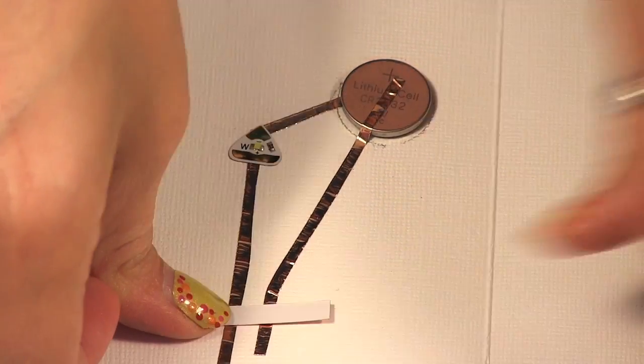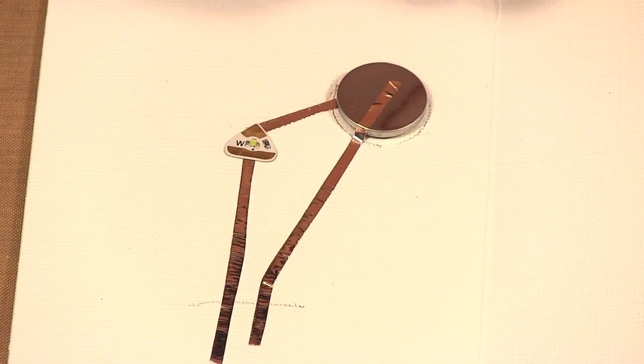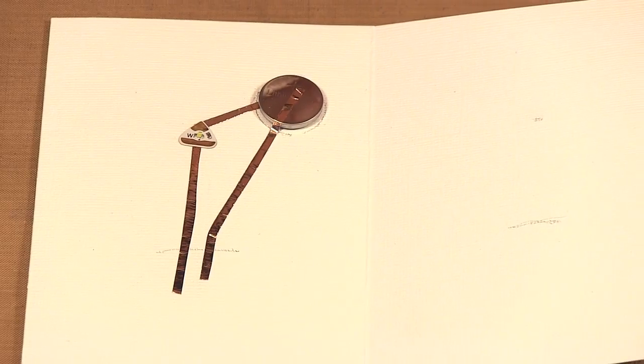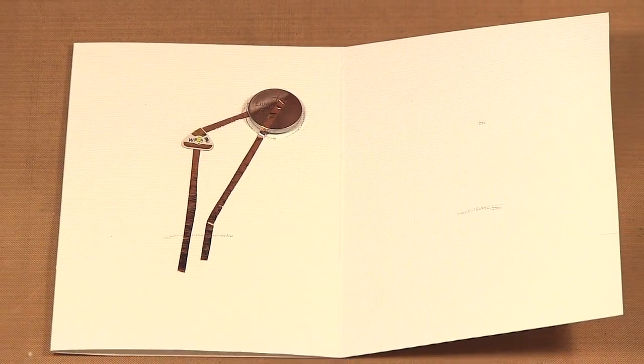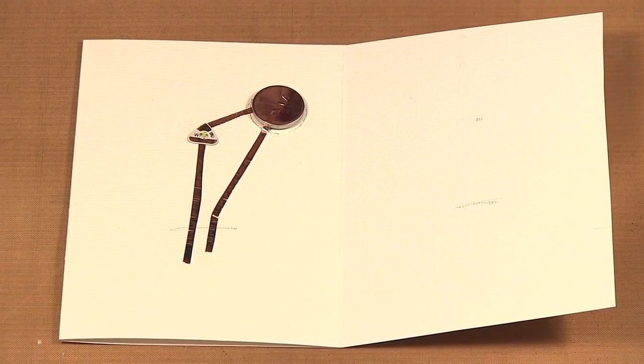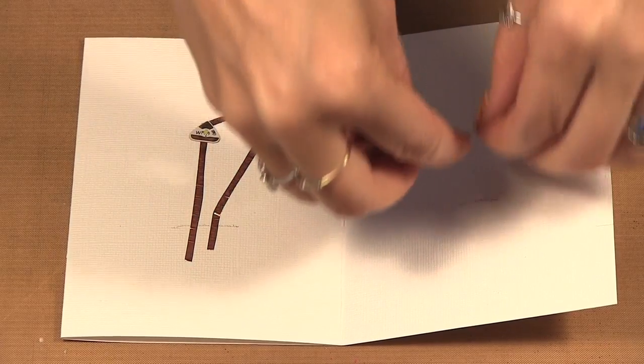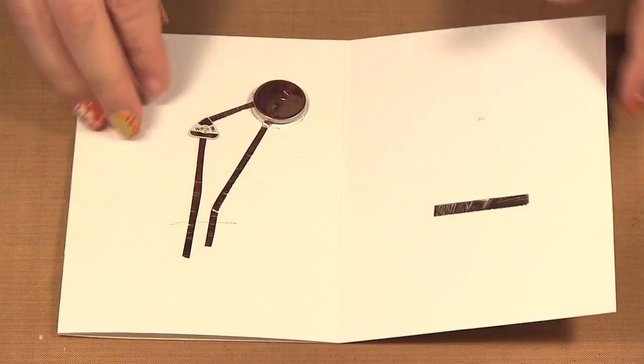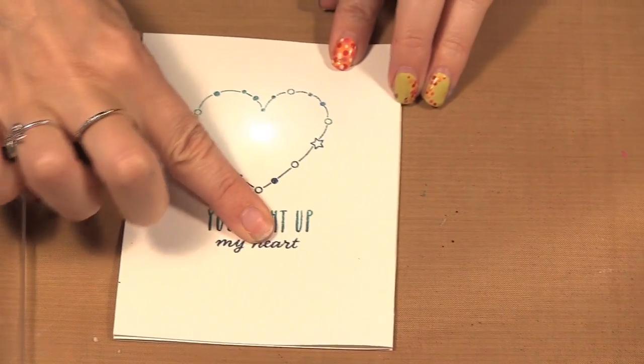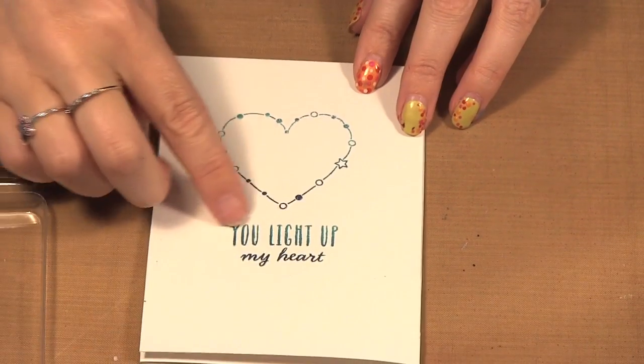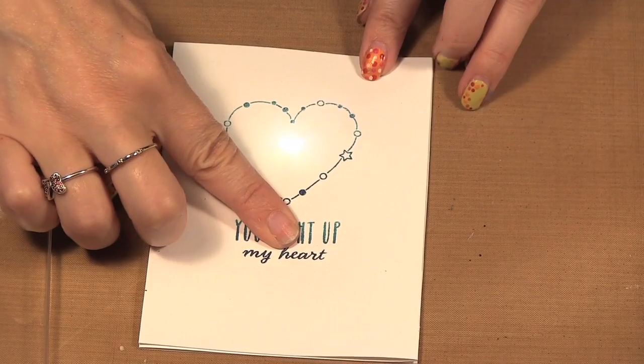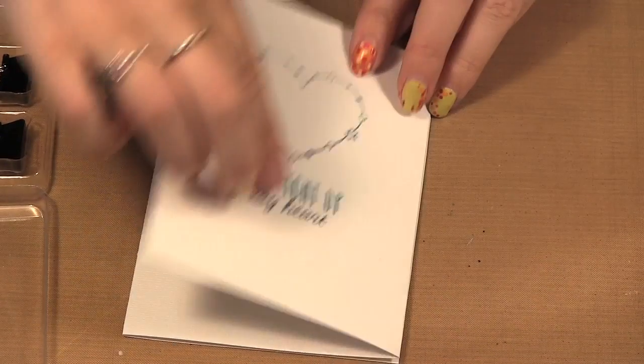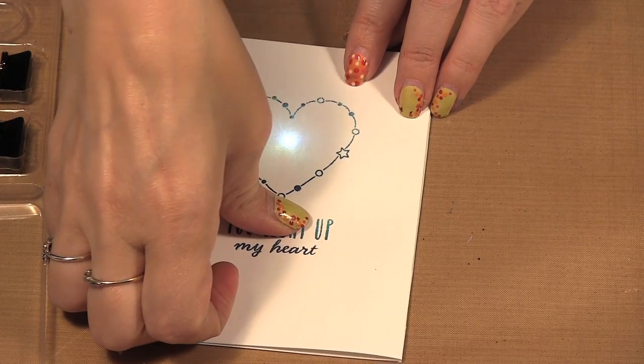So what I'm going to do is that line I made on the other side is where this is going to tape. So I put this here. So then when I turn over my card it says you light up my heart and you press it and our heart is lit up. You just have to make sure you press on that.